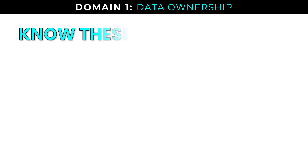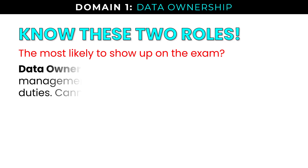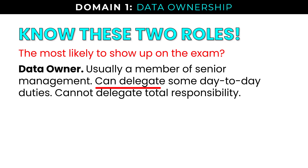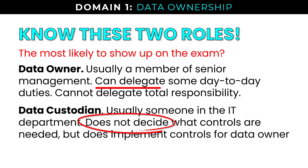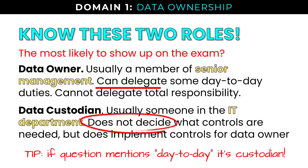Know these two roles for data ownership. The data owner is someone who can delegate day-to-day responsibility for data handling and security, and is usually a member of senior management. The data custodian implements controls on behalf of the data owner but doesn't decide what controls are needed, and is typically someone in the IT department. Exam tip: if a question mentions day-to-day duties, they're typically referring to the custodian.